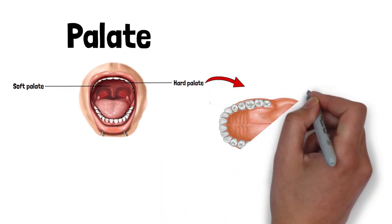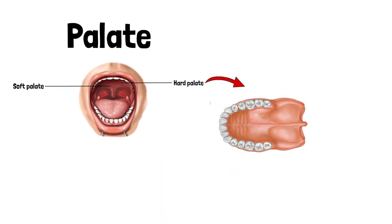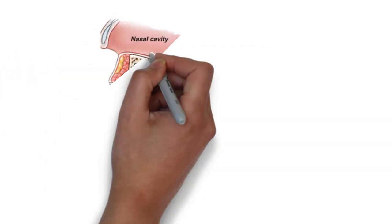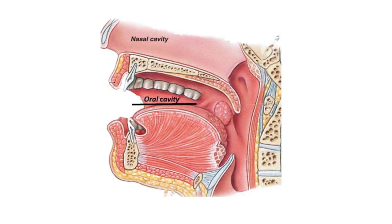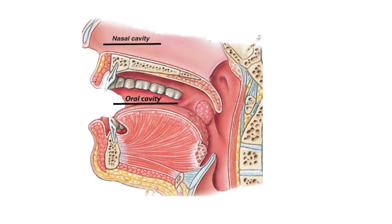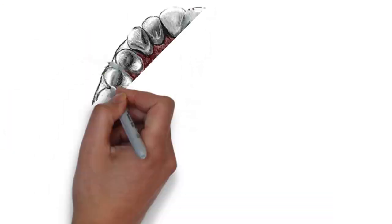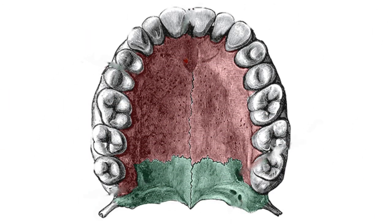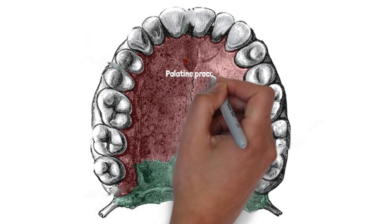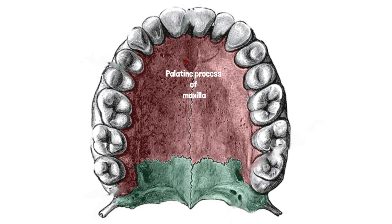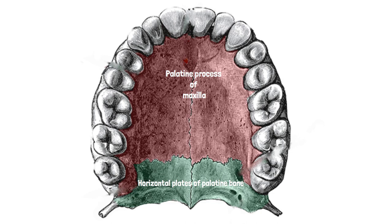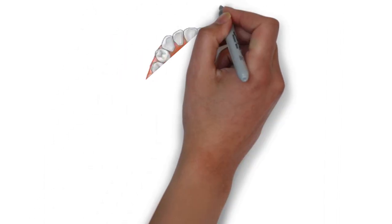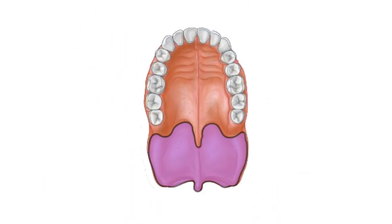The hard palate is covered by a tightly bound layer of oral mucosa and forms much of the roof of the oral cavity. Above it, the hard palate is covered by the respiratory mucosa and forms the floor of the nasal cavity. The palatine process of the maxilla forms the anterior three-quarters of the hard palate, and the horizontal plates of the palatine bones form the posterior one-quarter. Posteriorly, the hard palate is continuous with the soft palate.